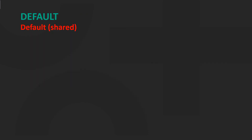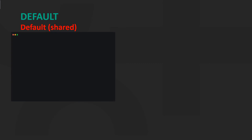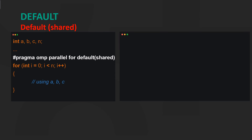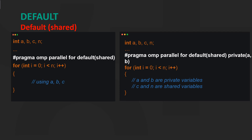There are two versions of the default clause. First, we focus on the default shared option. The default shared clause sets the data sharing attributes of all variables in the construct to be shared. Here, a, b, c, and n are shared variables. We also see another usage of the default shared clause: to specify the data sharing attributes of the majority of variables and then additionally define the private variables.